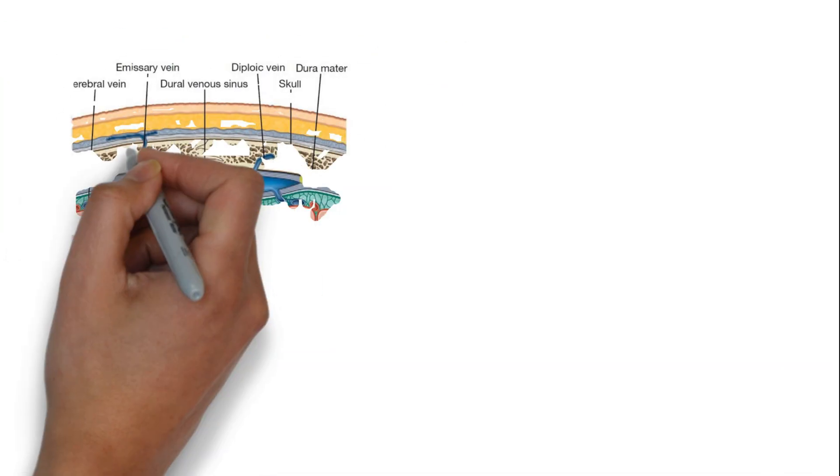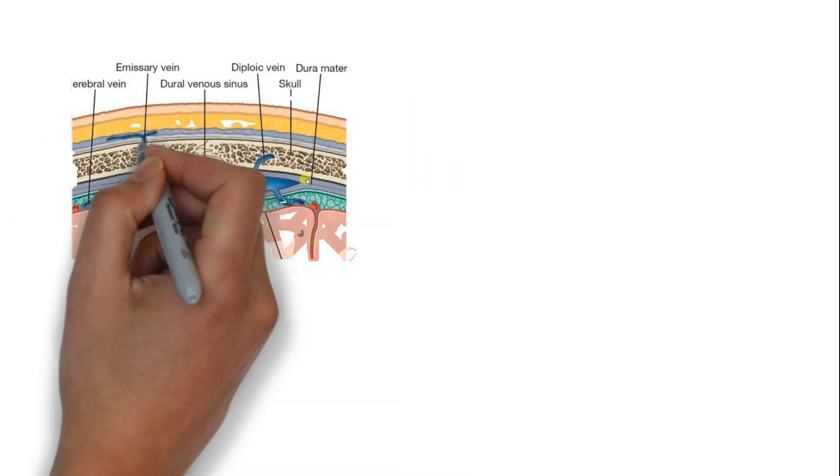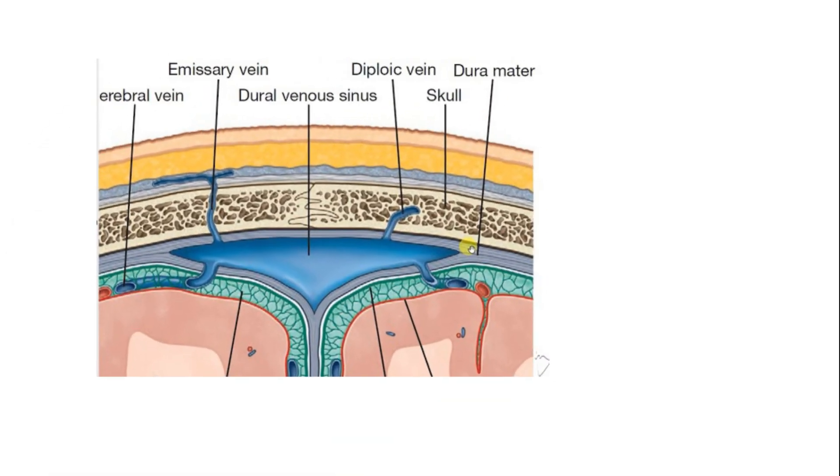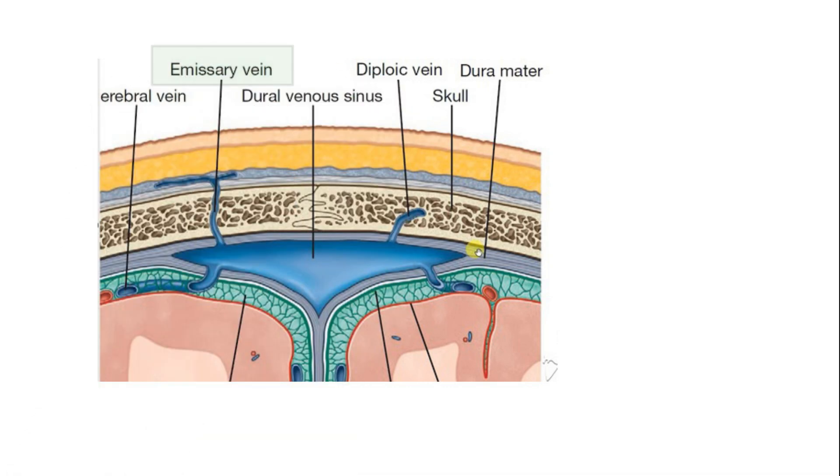This is similar to the dangerous area of scalp where also emissary vein acts like a carrier of infection between loose connective tissue area and cranial cavity.